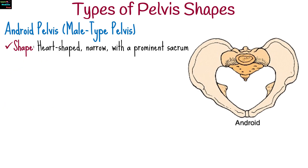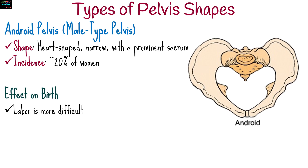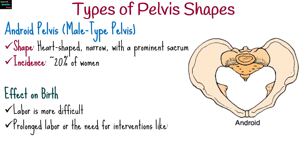Second, the android pelvis. This shape is heart-shaped and narrow, resembling a typical male pelvis. It occurs in about 20% of women. Because of its narrow structure, labor can be prolonged, and there is a higher chance of needing interventions such as forceps, vacuum assistance, or even a C-section.